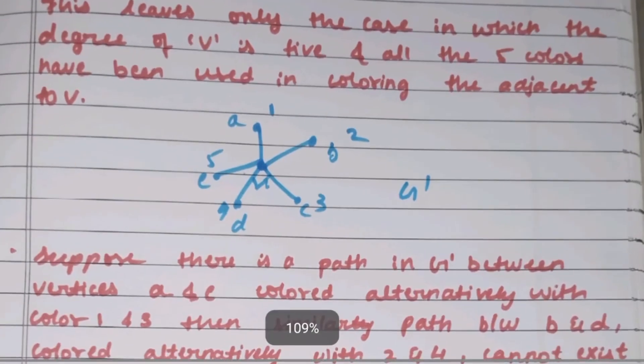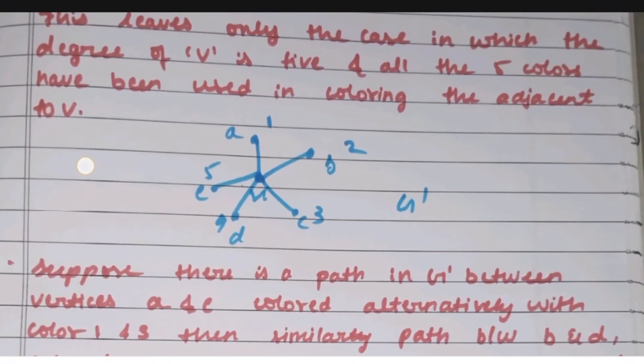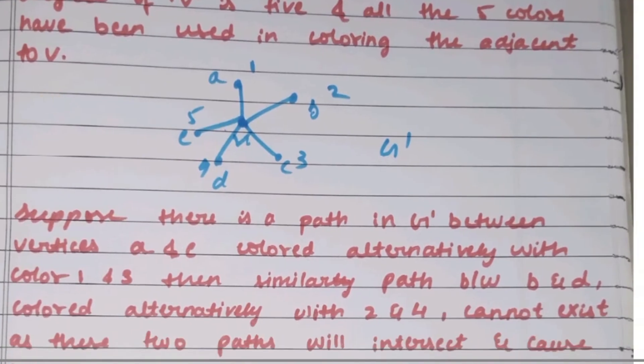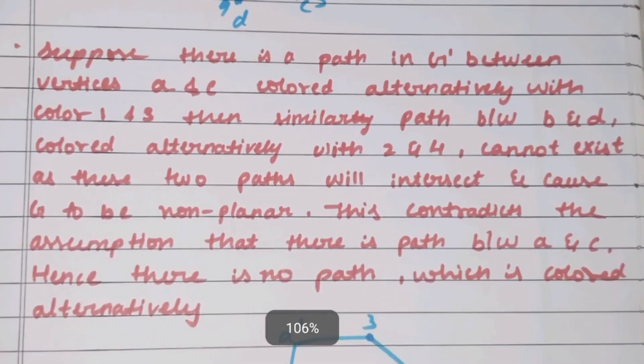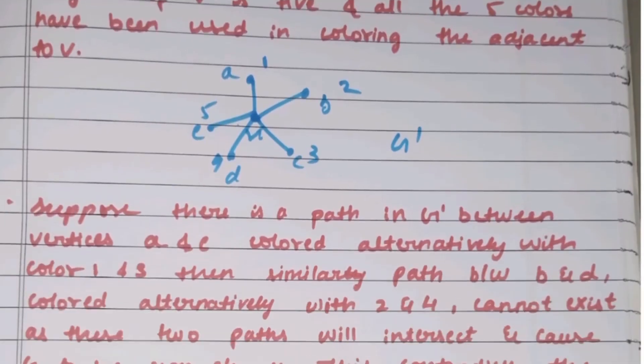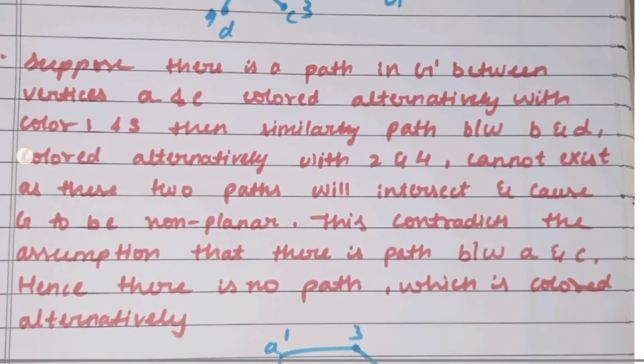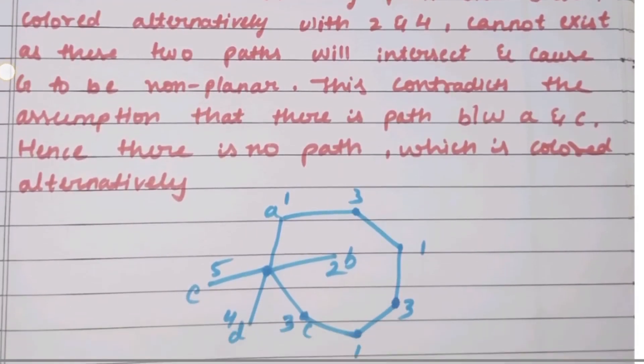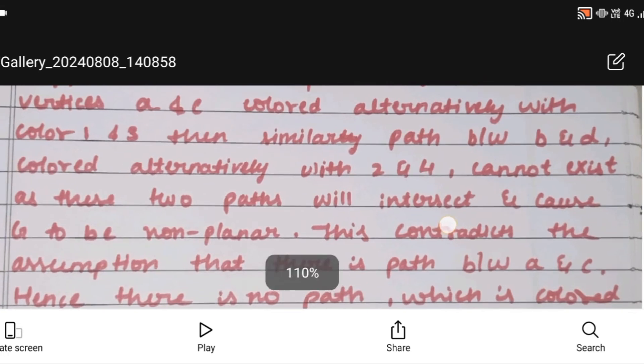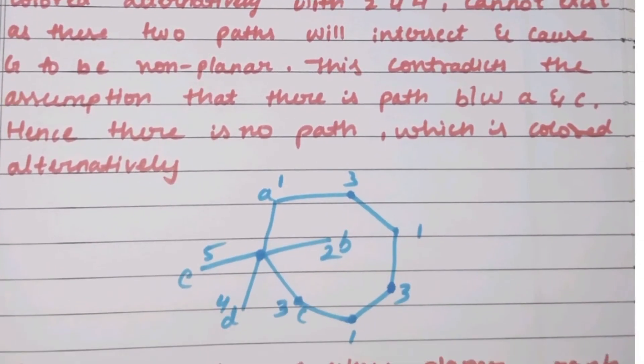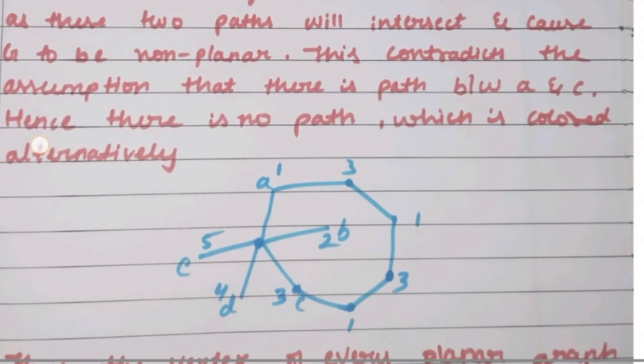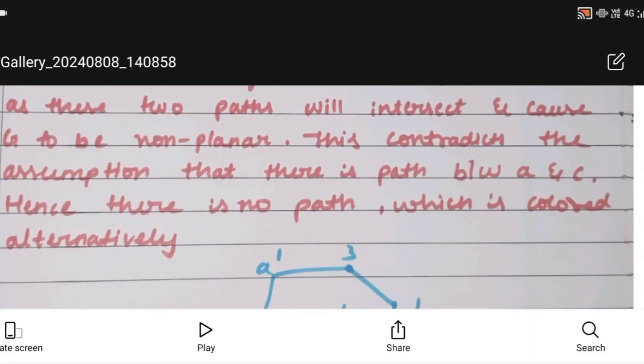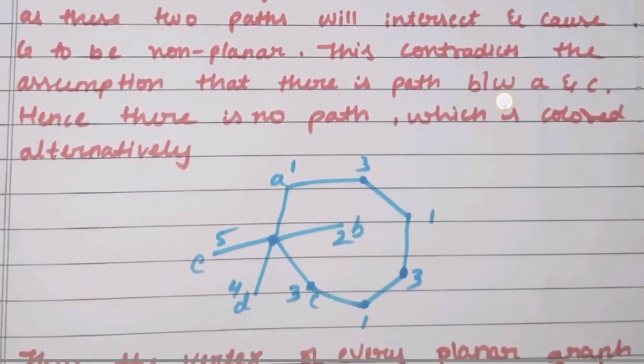Suppose there is a path in G' between vertices A and C colored alternately with colors 1 and 3. Then a similar path between B and D colored with 2 and 4 cannot exist, because drawing a chain between B and D would cause edge crossings, making the graph non-planar. This contradicts the assumption.